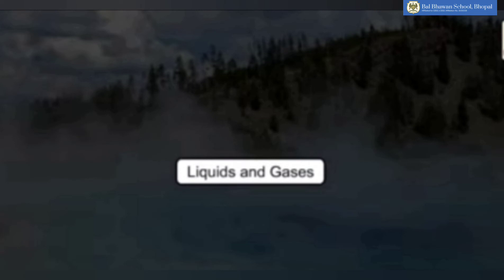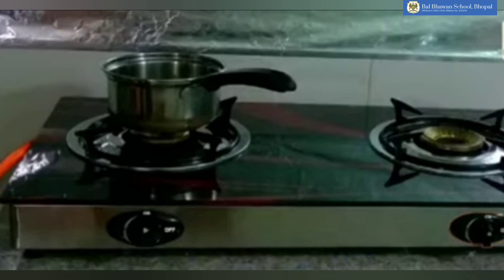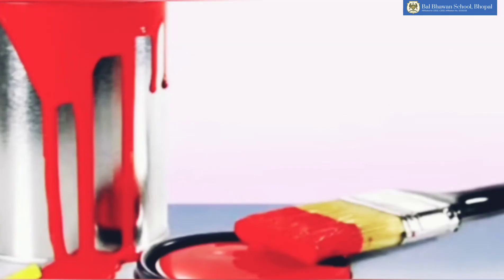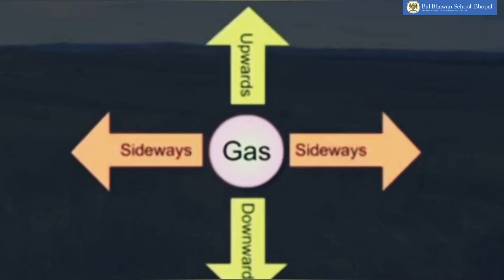Now let us see liquids and gases. Liquids can be poured easily. Gas such as the gas of LPG can be smelt. Liquids flow downwards or sideways. Gas will flow in every direction, upwards, downwards and sideways. It spreads.